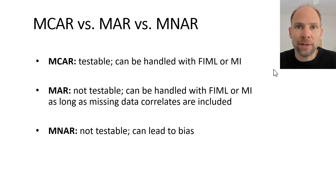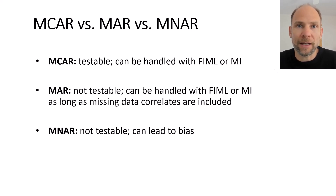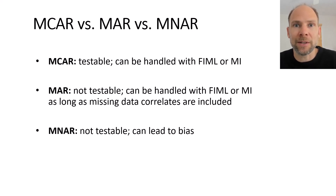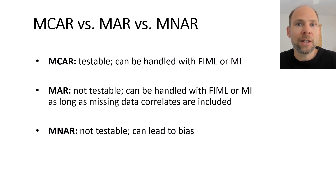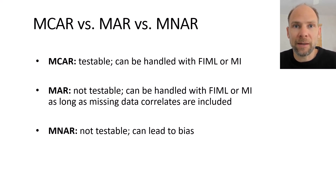Missing not at random is the most problematic case — it is not only not testable, but also difficult to address properly. You cannot simply use full information maximum likelihood or multiple imputation and expect unbiased results, because the information about why data are missing cannot be accounted for. There are special methods available for MNAR data, however those make strong assumptions and can still be problematic.